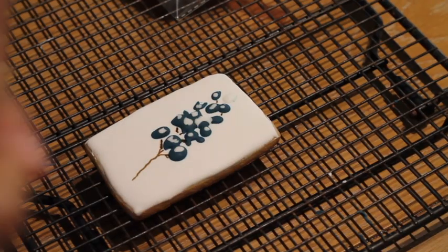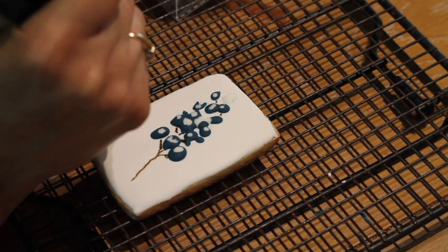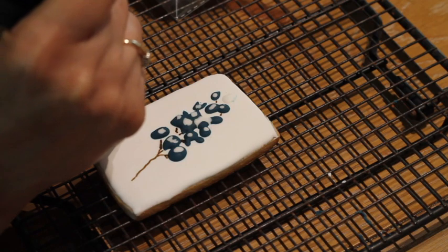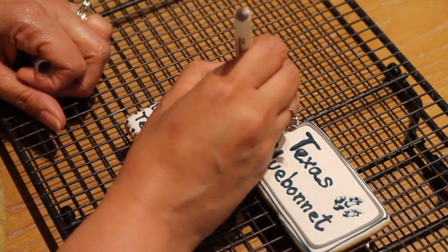Now I'm going to let my cookie dry completely. Later on with a brown fine tip edible marker, I'm going to trace the stems and some other details.